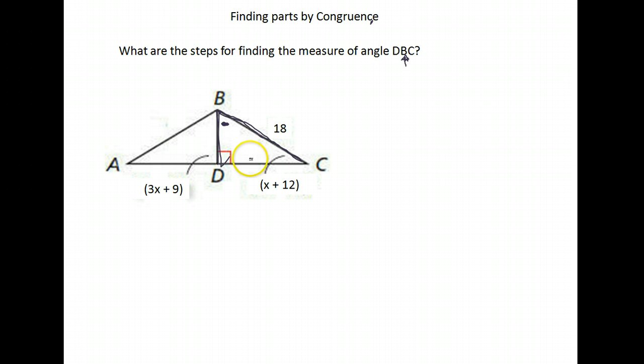Now this is going to take a couple of steps. We know that this angle is 90. We don't know the exact number for this one. We know it's X plus 12, but at this point we don't know what X is. And we know this other angle here in this triangle is 3X plus 9.